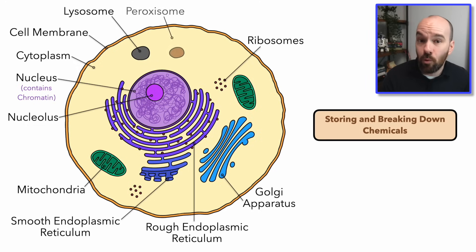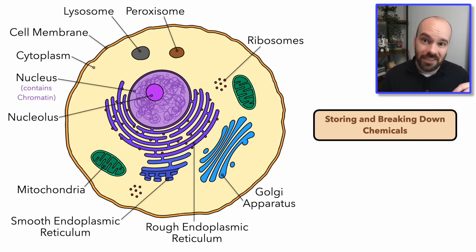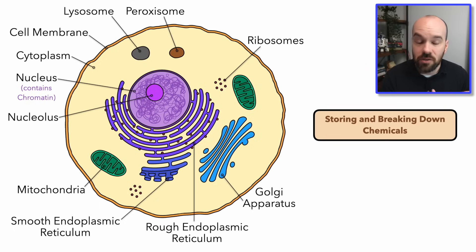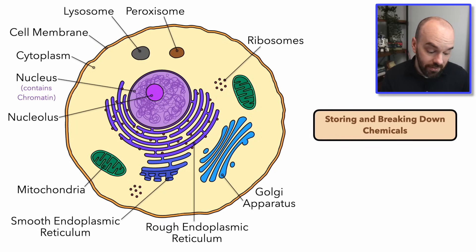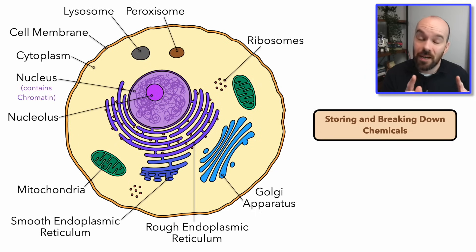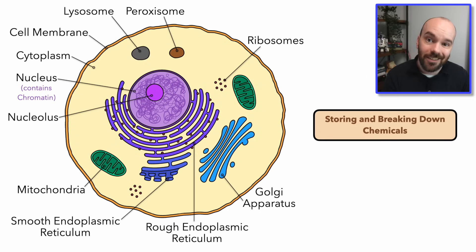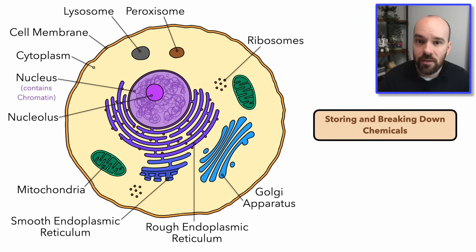Next, we have something called a peroxisome. A peroxisome is kind of like a lysosome, but instead of breaking things down, it's going to work to oxidize or neutralize some toxic substances. A big example is hydrogen peroxide, which is where it gets its name from. To remember this, just think perox and detox — it'll detoxify certain chemicals that end up in our cells.